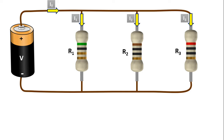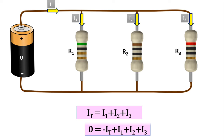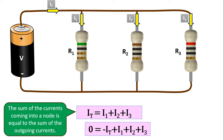This is where Kirchhoff's current law guides us. According to this law, the sum of the currents coming to a point is equal to the sum of the outgoing currents. There is only one current coming from the source here, shown as IT, the total current. Hence IT equals I1 plus I2 plus I3. Rearranging: negative IT plus I1 plus I2 plus I3 equals 0. So the sum of all currents in a circuit is equal to 0.